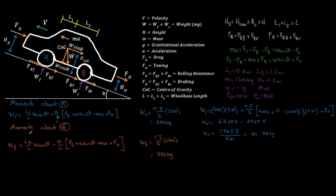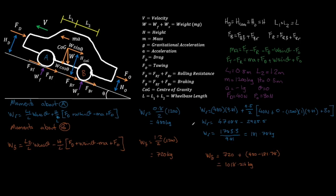We can verify by taking the initial front axle load of 720 kg, adding the 480 kg static rear minus the new 181.78 kg rear load: 720 plus (480 minus 181.78) equals approximately 1018.22 kg on the front axle during braking. What we lost from the rear, we gained on the front. That's it for today — I hope you enjoyed it. If you did, give it a like and subscribe. We've got plenty more videos coming up, including more realistic examples, lateral transfer, anti-dive, and anti-squat.